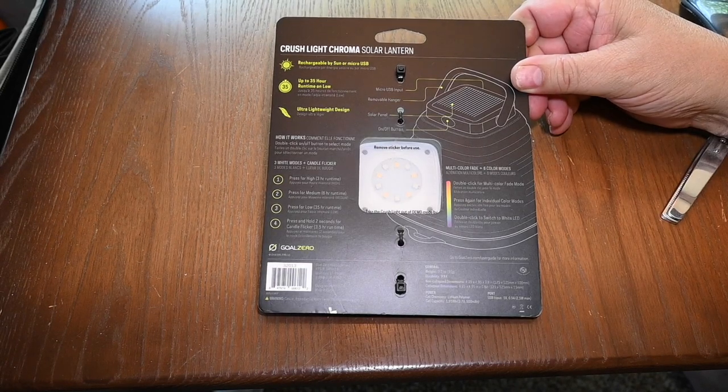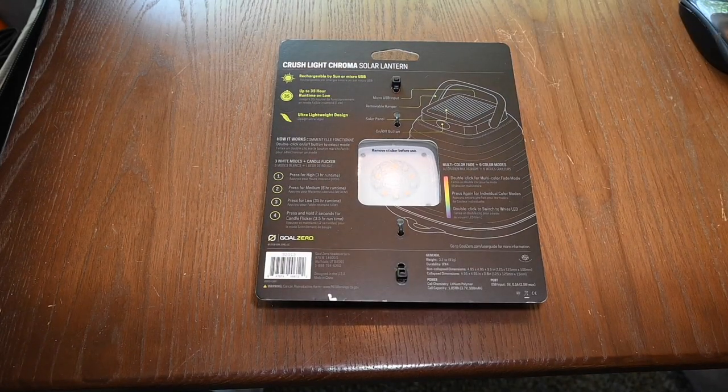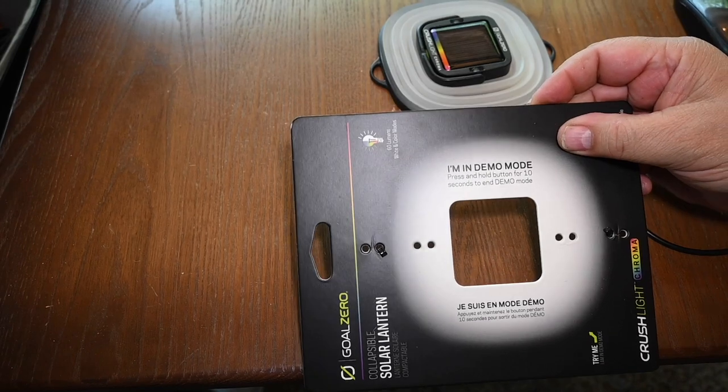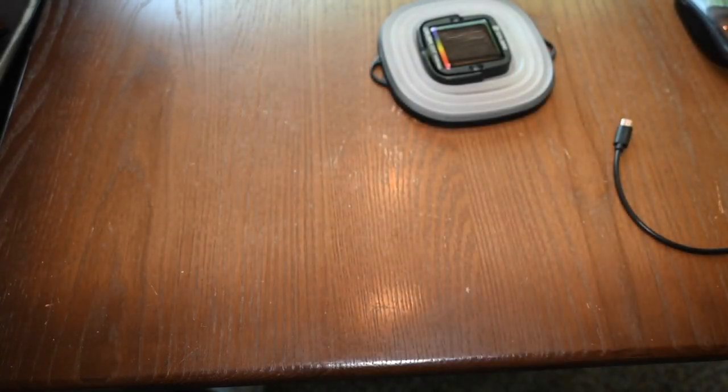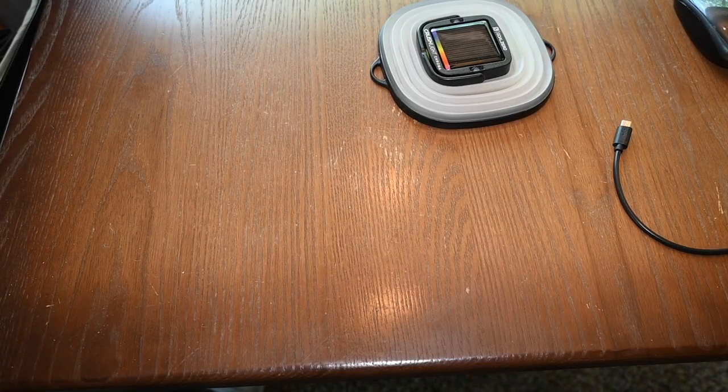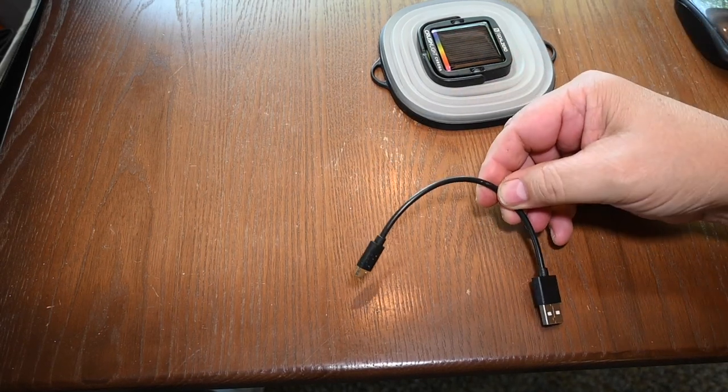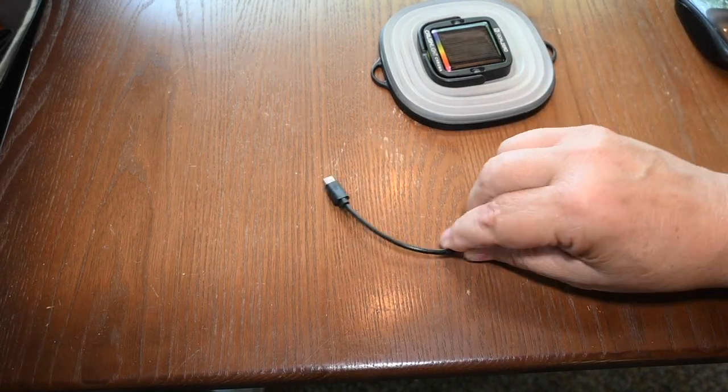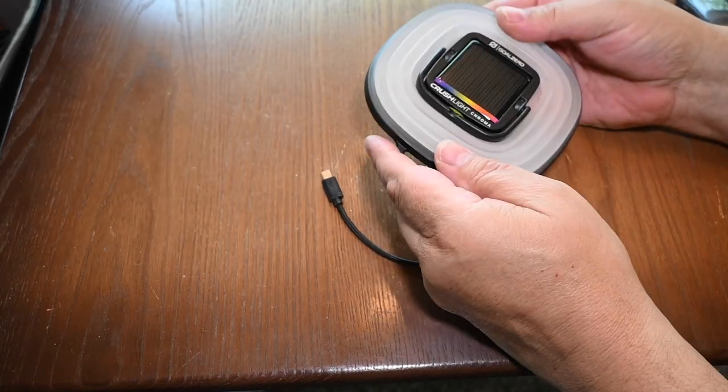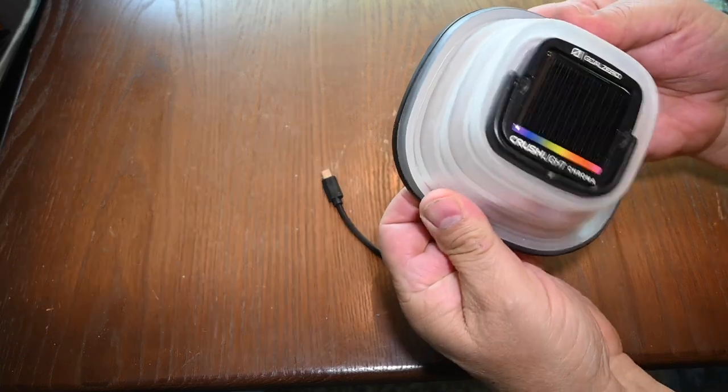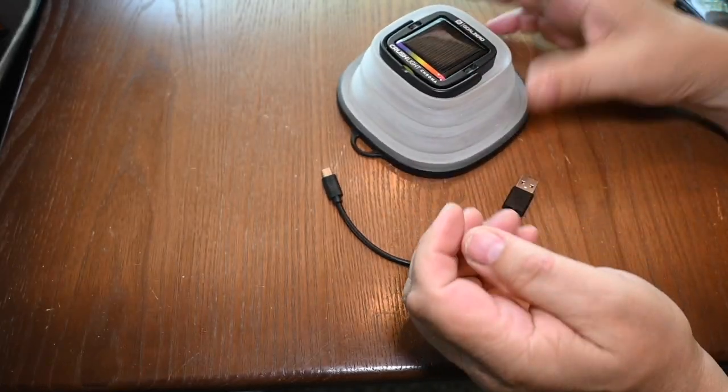We'll take it out of the package and try it out. When you first open it, it does say that it's in demo mode so you have to press the power key for 10 seconds to take it out of that mode, which we've done. It also comes with a USB port so that you don't have to charge it with solar power. And here's a solar cell. That's essentially all there is to it.